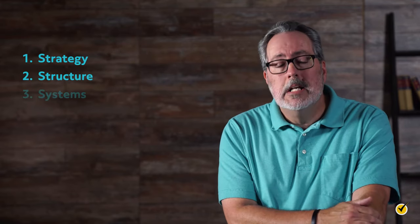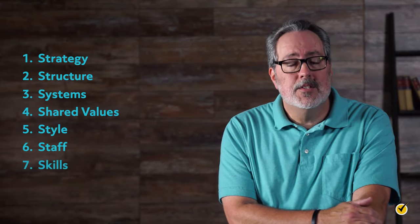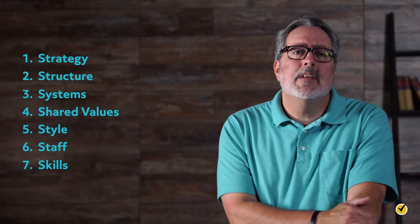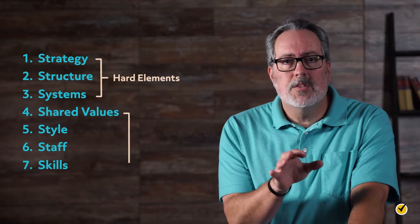The seven Ss are strategy, structure, systems, shared values, style, staff, and skills. These seven elements are broken down into two categories: hard elements and soft elements.